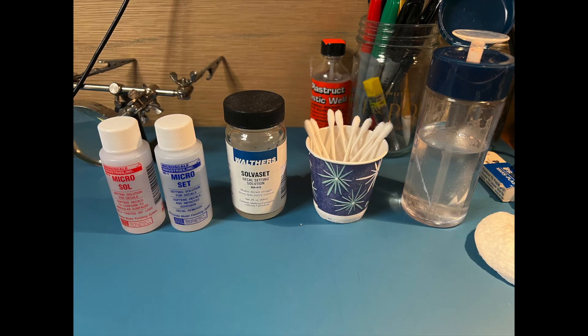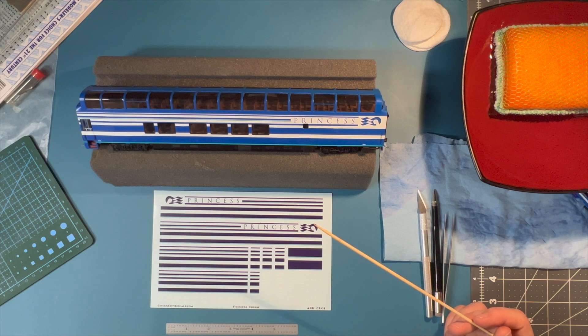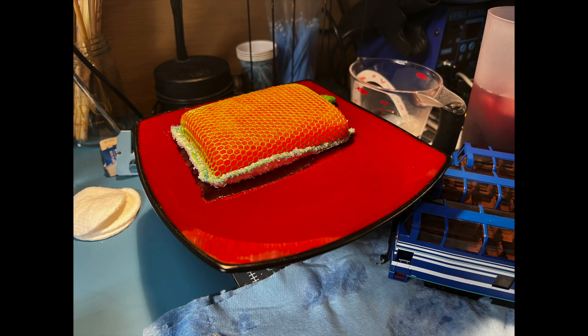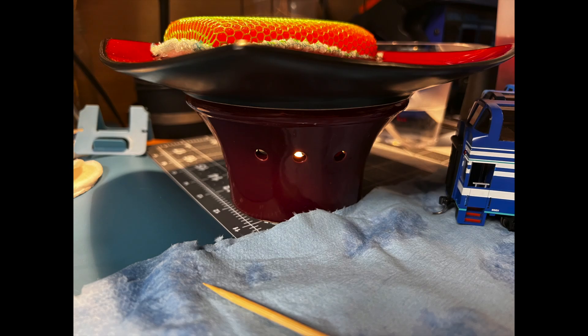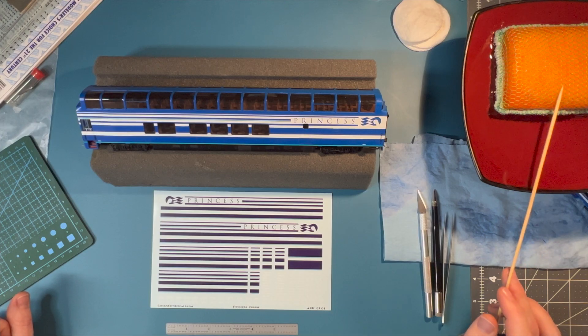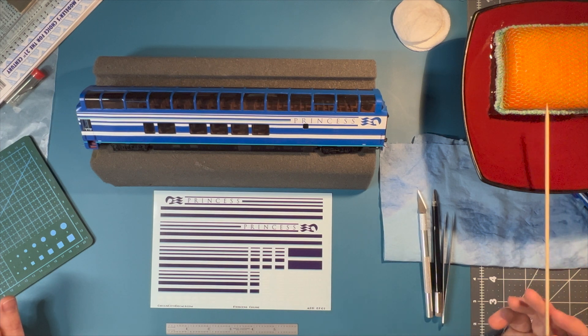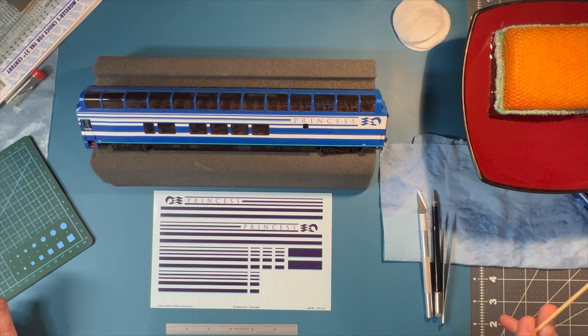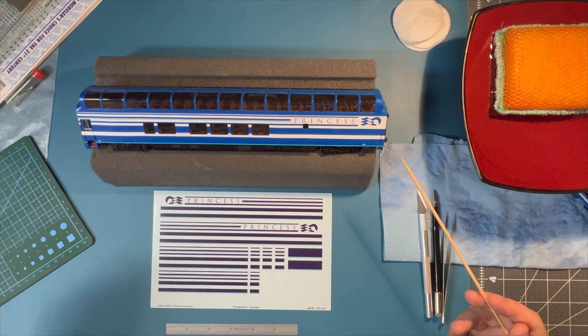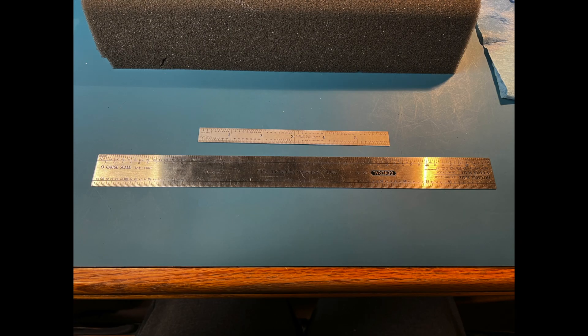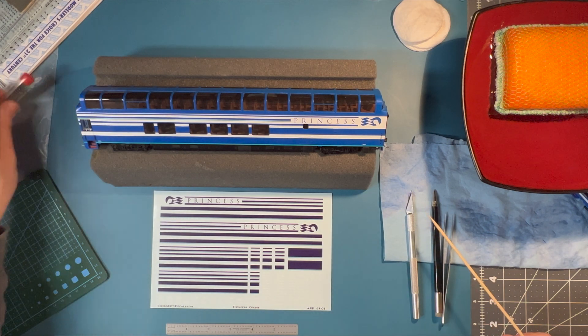I will be using Microsol and Microset. I do not know if I'll be using the Solvaset. I have it here just in case. I have q-tips, rubbing alcohol, I have my lukewarm water sitting above a candle to keep it warm because it's actually very cold in my basement right now, and a sponge. And I'll show you why I do that differently than just letting the decal soak in the water. I can set it on the sponge and it doesn't destroy the adhesive backing on the decal.